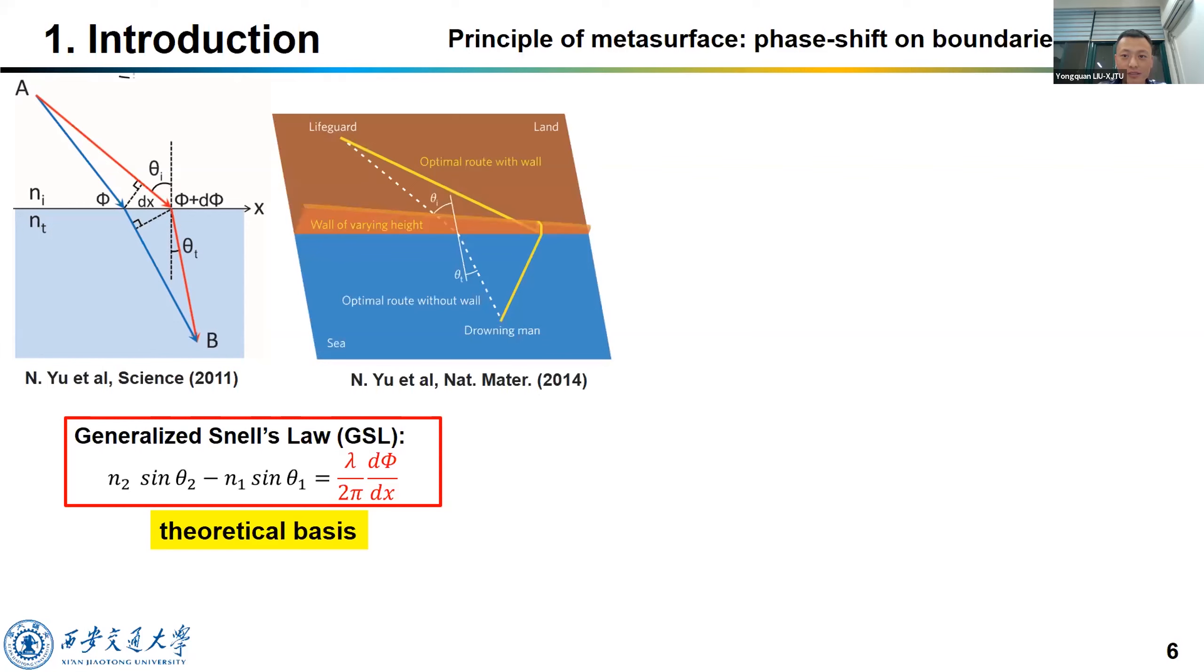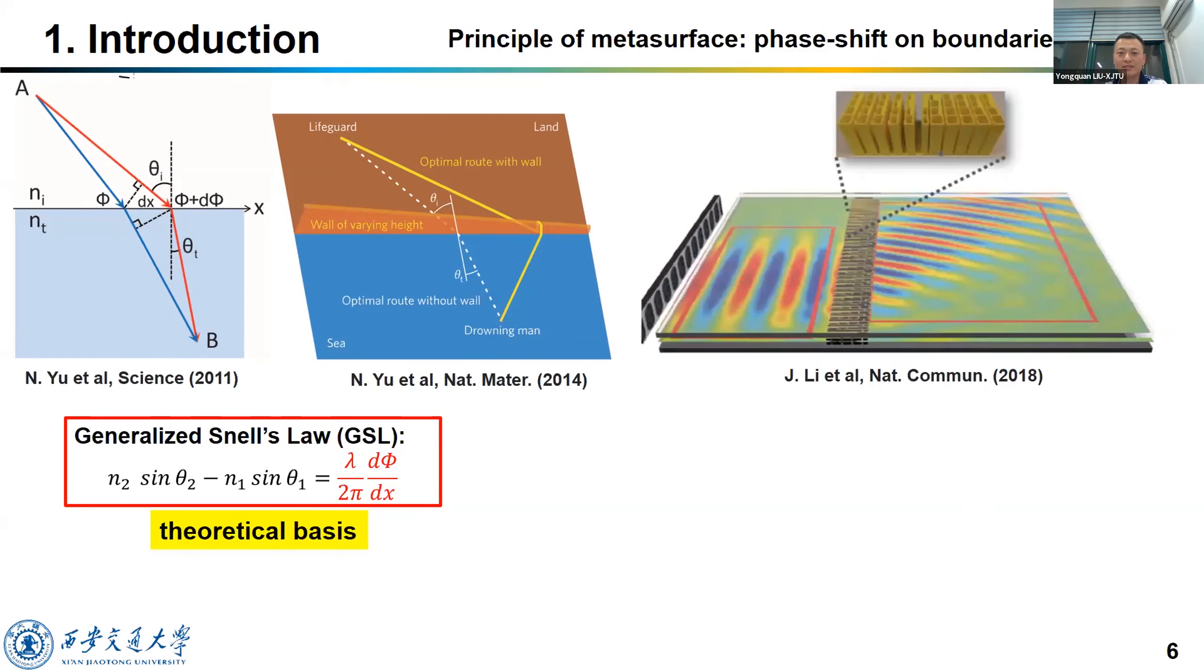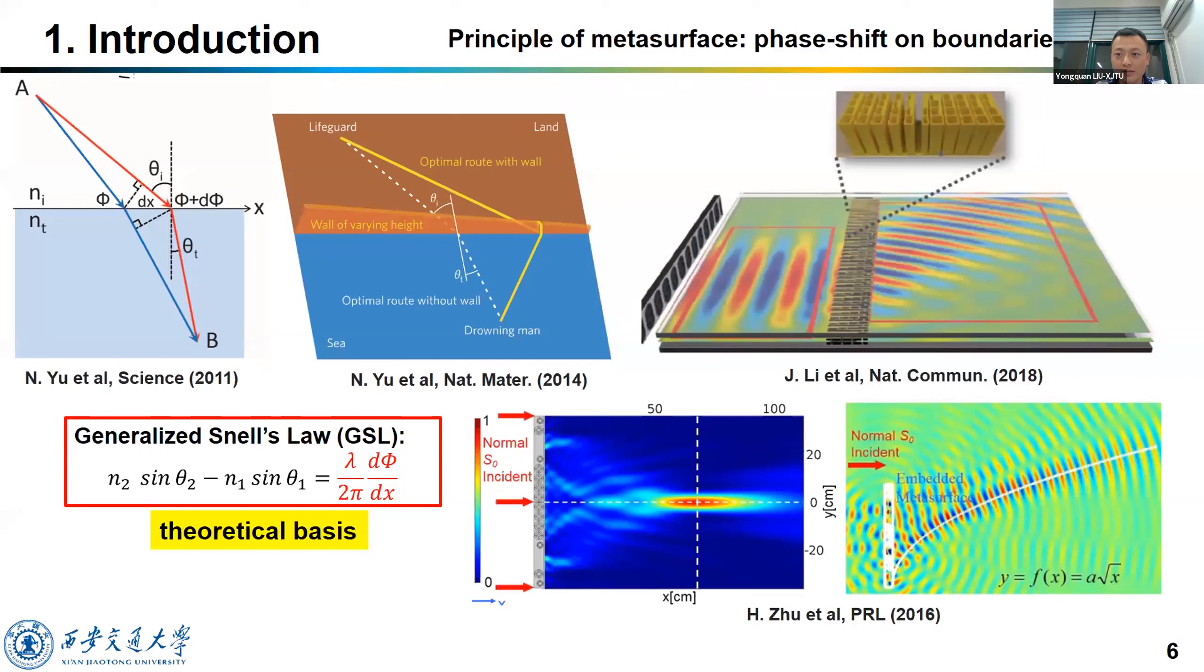Actually, the metasurface is quite similar to a wall of varying height. The shortest way across the wall must be changed accordingly. Based on this principle, researchers have used the metasurface to make abnormal refraction of waves, the focusing of waves, and to let the wave propagate along a certain curve or certain path.